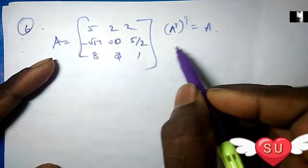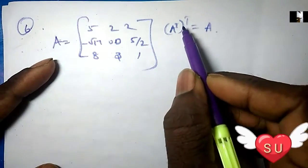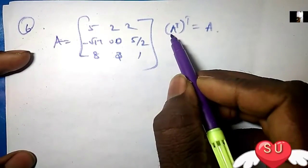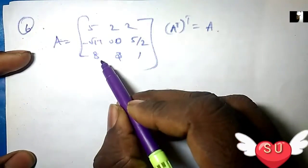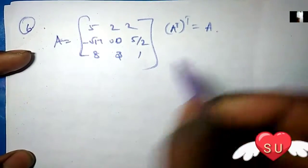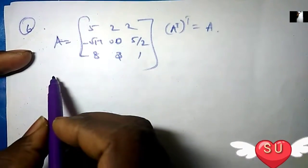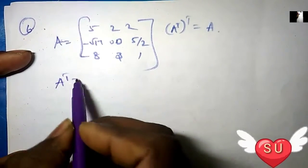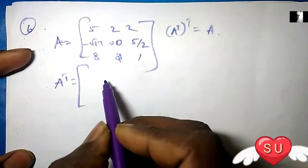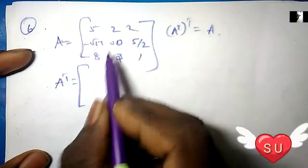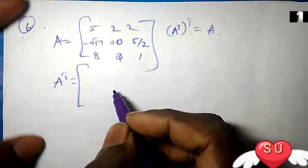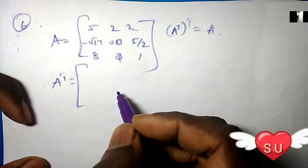We are going to talk about A-transpose. A-transpose of transpose is equal to A. Next, A-transpose of transpose — I say this is going to be the same thing.